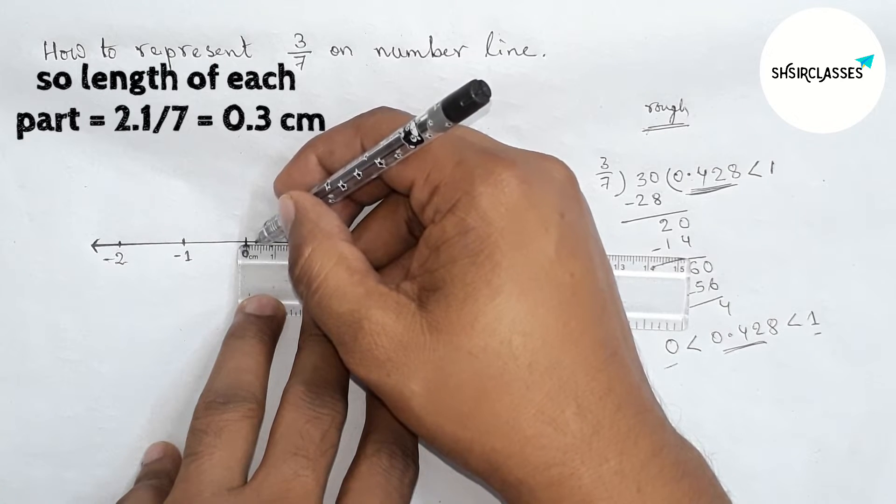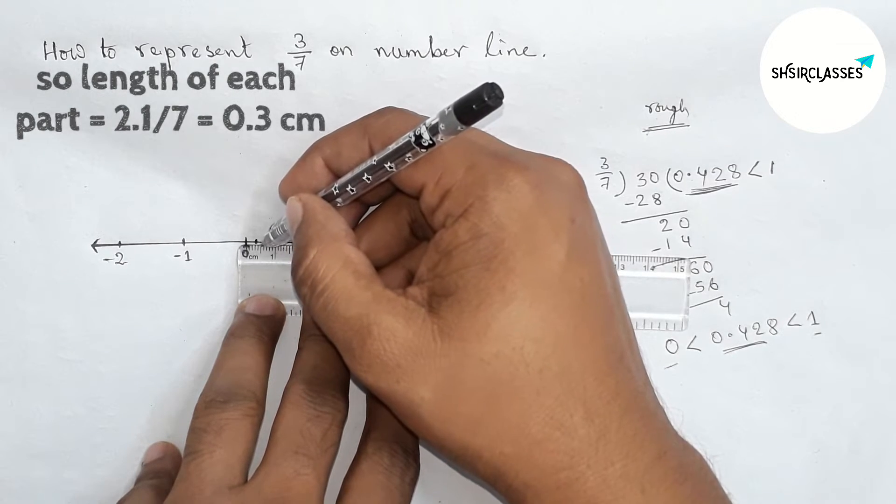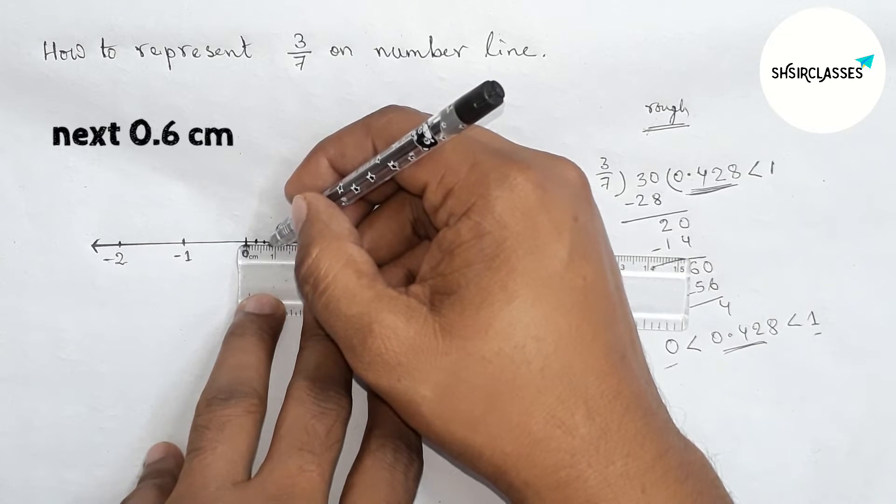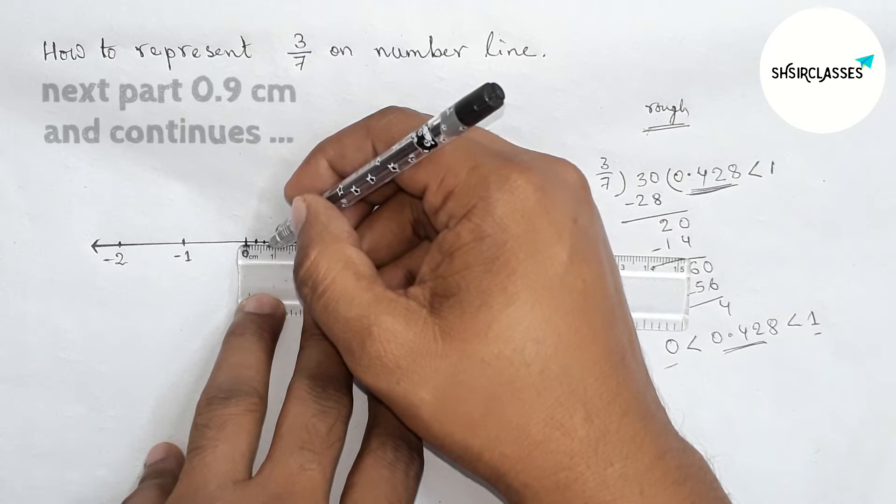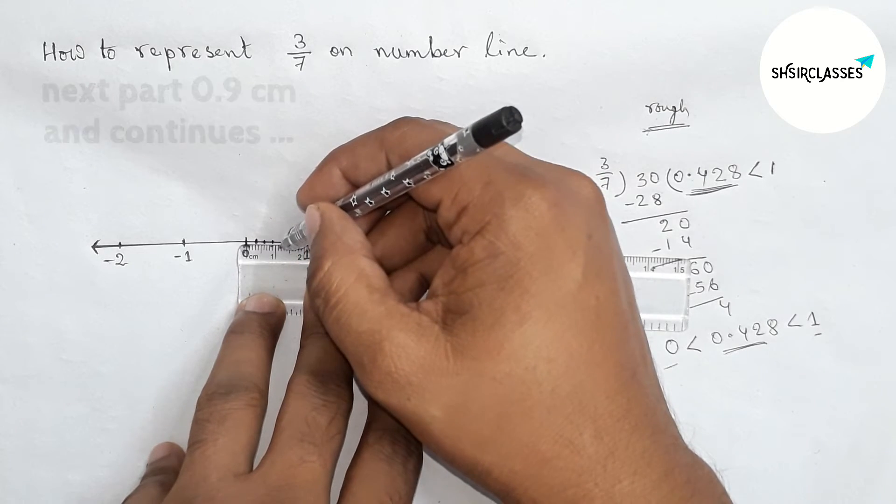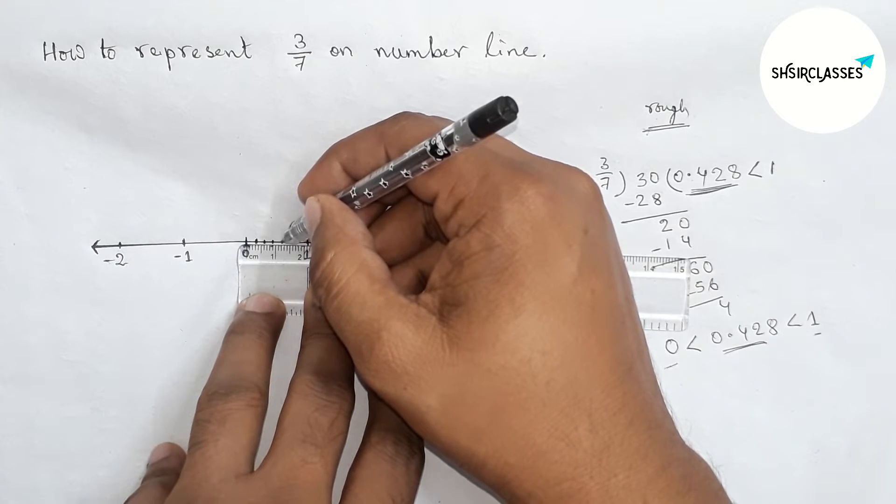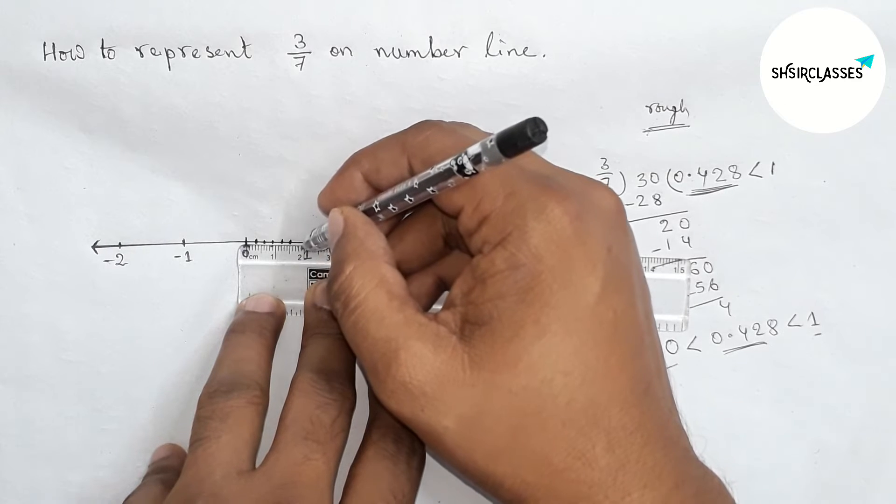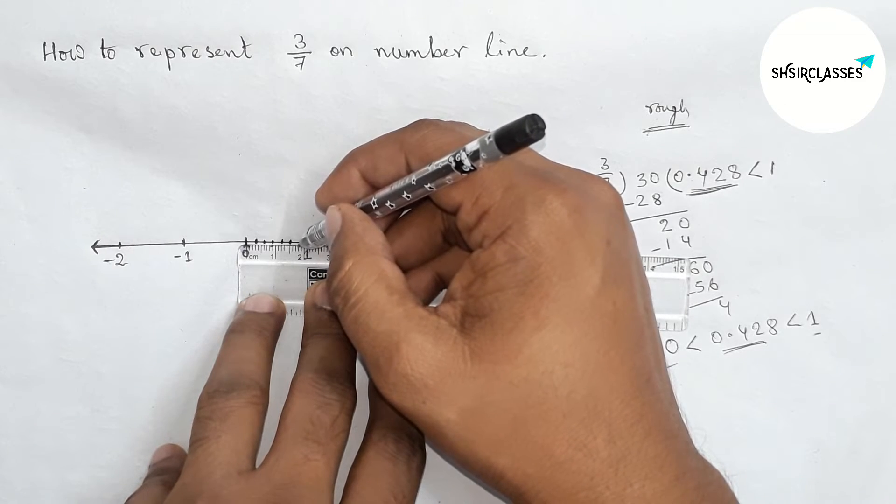First part is 0.3 centimeters, second part will be 0.6 centimeters, third part will be 0.9 centimeters, fourth part will be 1.2 centimeters, fifth part will be 1.5 centimeters.